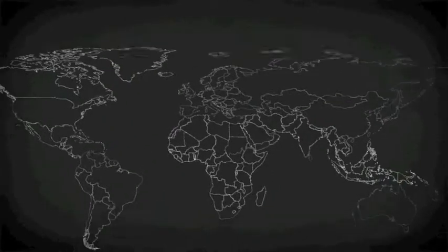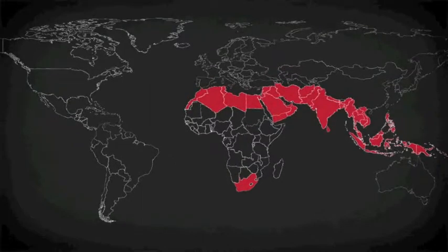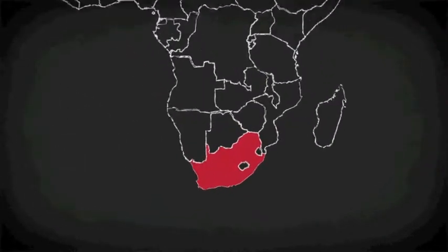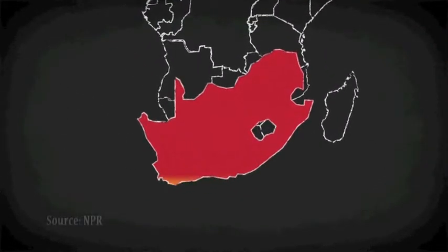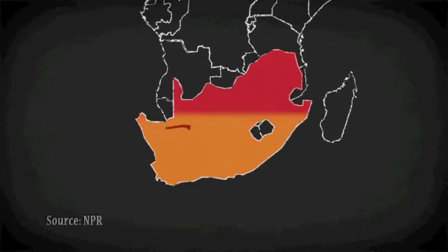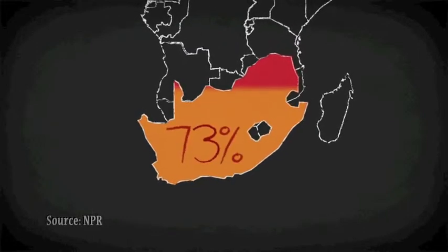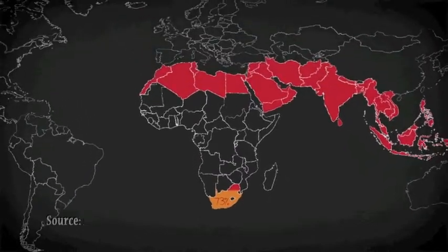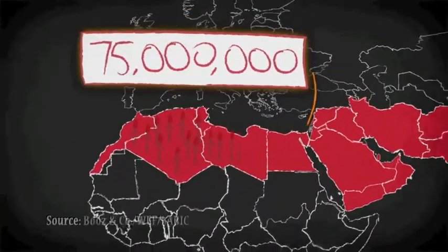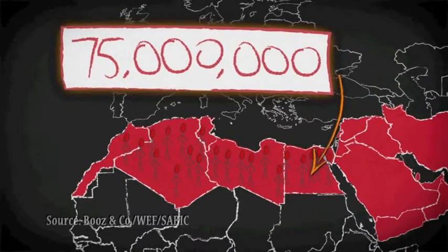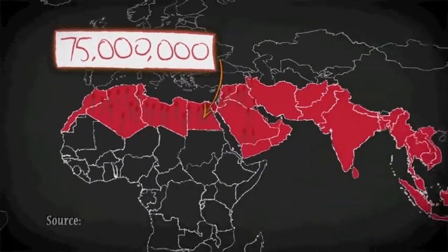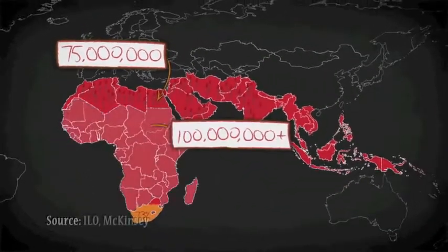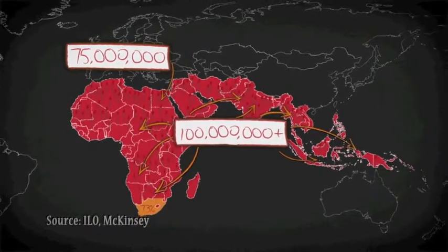In some regions, the situation is getting worse. According to some estimates, in South Africa, almost 75% of the unemployed are under age 35. To absorb young people entering the labor market, the Arab world needs to create 75 million new jobs in the coming decade. South Asia and Africa will need hundreds of millions more.